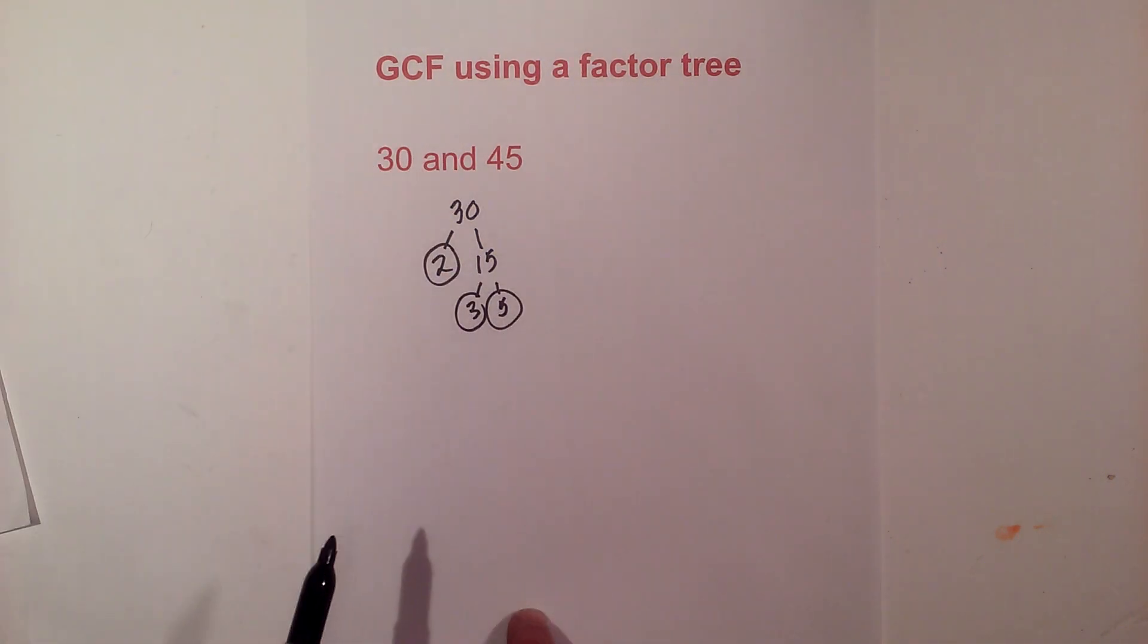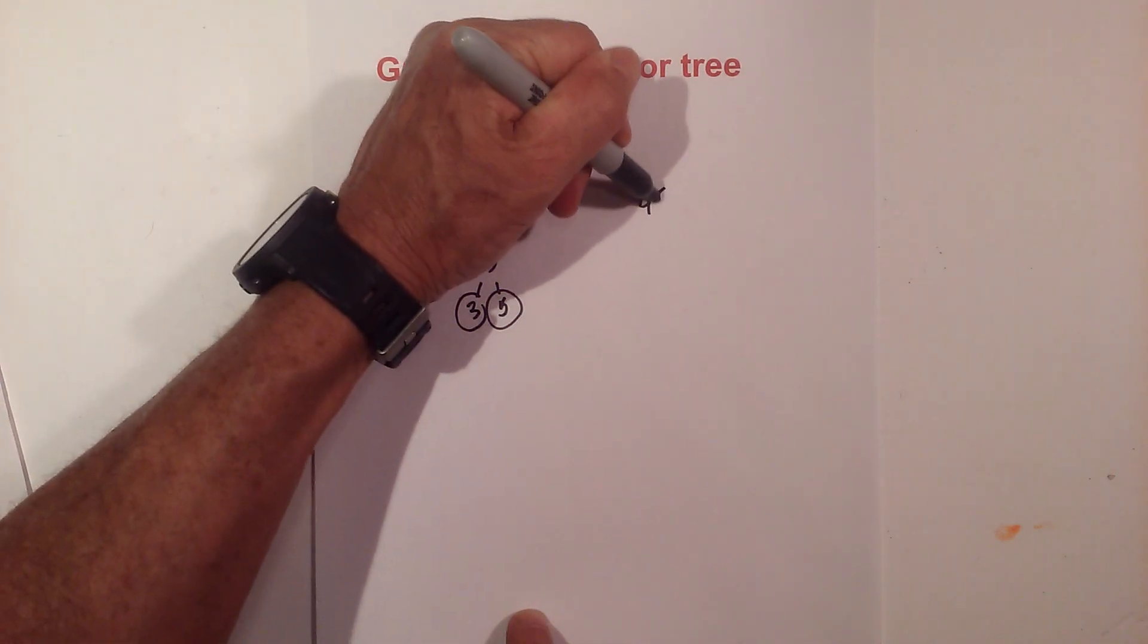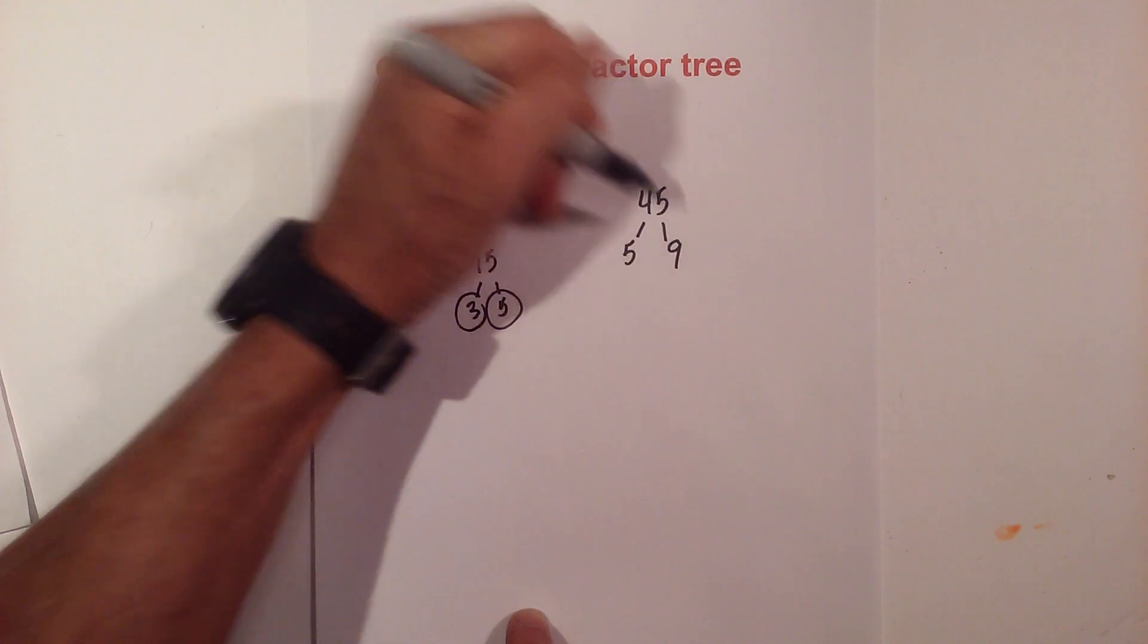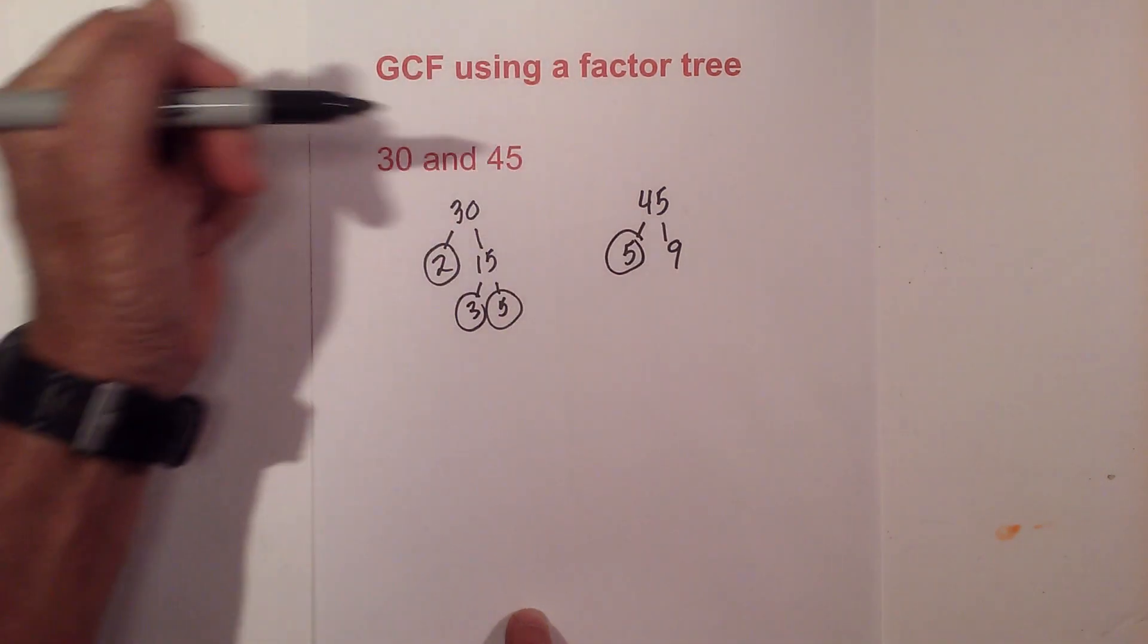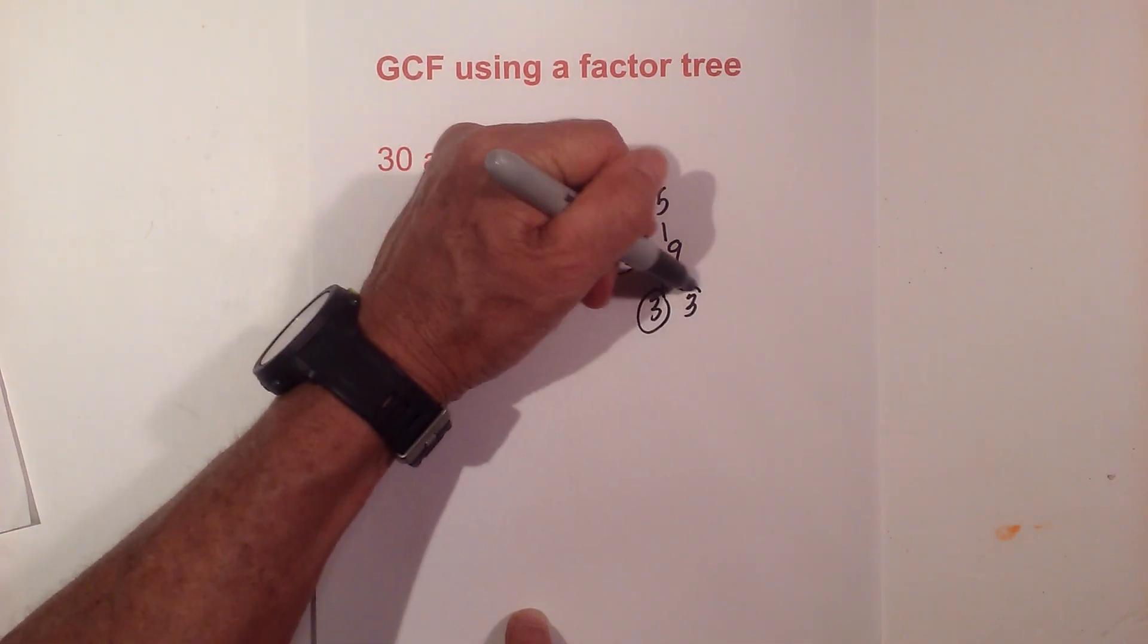Next, let's work with 45. For 45, let's begin with 5 times 9 equals 45. Circle 5 because it is prime. And now 3 times 3 equals 9. They are both prime, and now I'm down to prime numbers with 45.